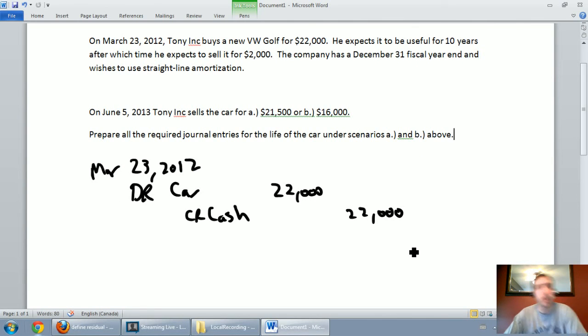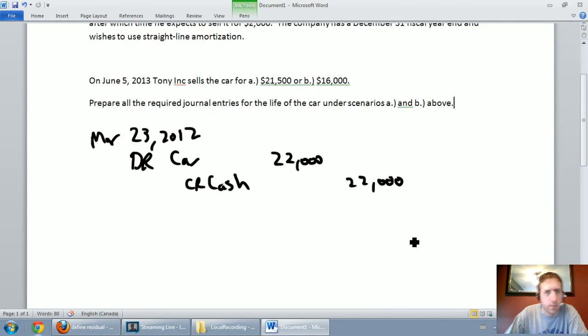The date is March 23rd, 2012 and we buy a car, let's assume for cash. I'm going to say I got a car, debit car $22,000 and we're going to credit cash $22,000. So we've got our car, marvelous. Now we've got to amortize it. Our fiscal year end is December 31st and that's the next relevant date.